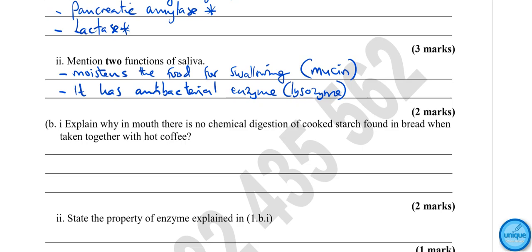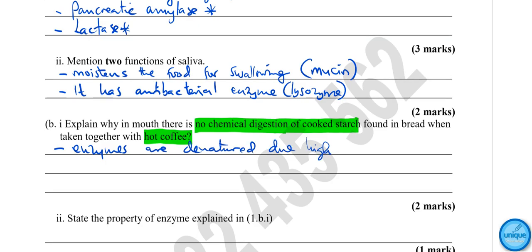Another question: Explain why in the mouth there is no digestion of cooked starch found in bread when you take it together with hot coffee. There is no chemical digestion of cooked starch because enzymes are denatured due to high temperature. As a result, there will be no chemical digestion of cooked starch.